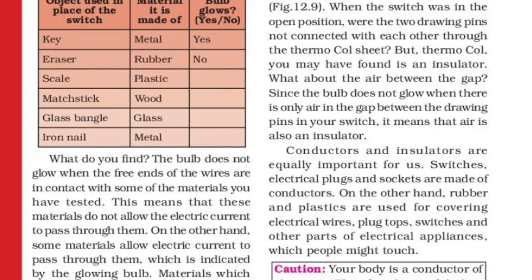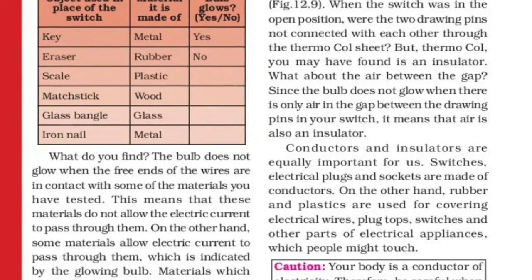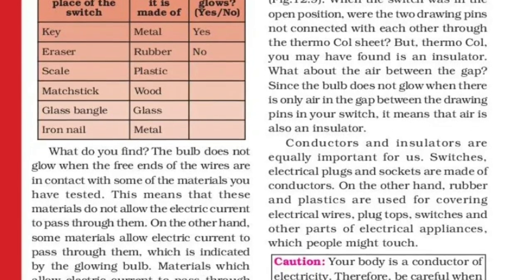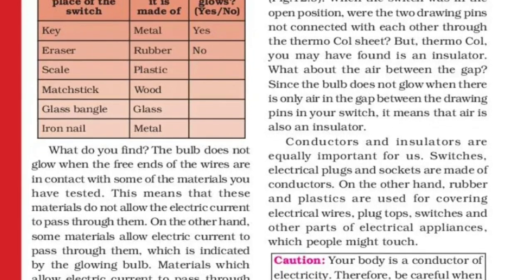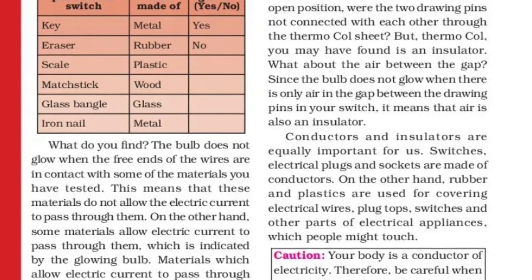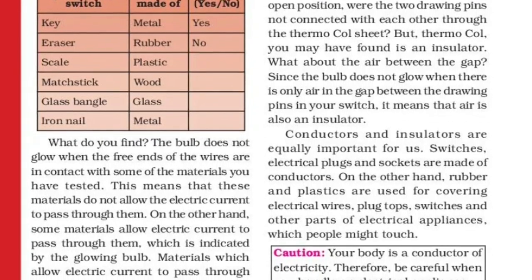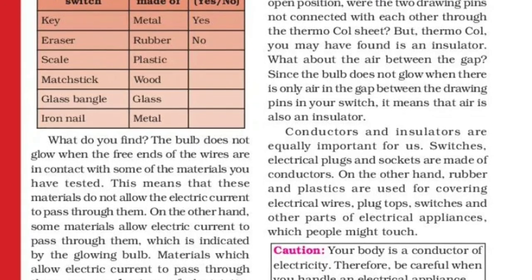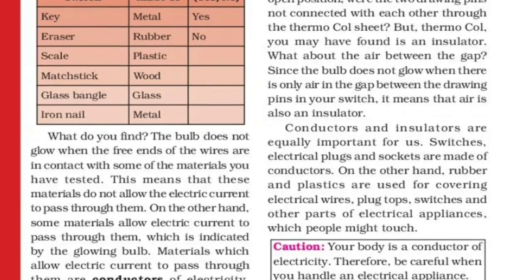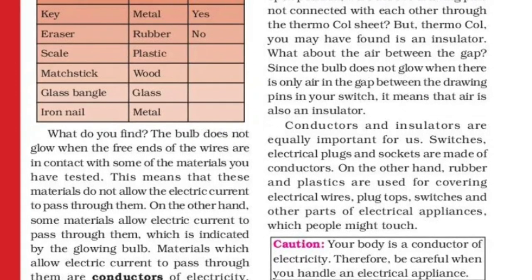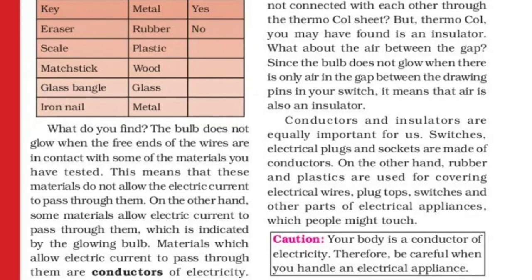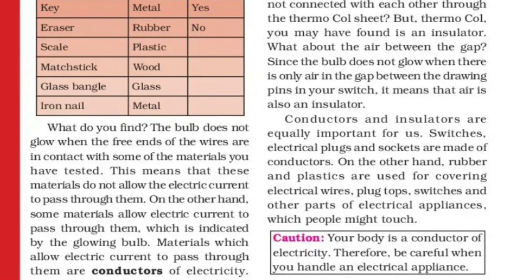The bulb does not glow when the free ends of the wires are in contact with some of the materials. This means those materials do not allow electric current to pass through them. On the other hand, some materials allow electric current to pass through them, which is indicated by the glowing bulb. Materials which allow electric current to pass through them are called conductors of electricity.